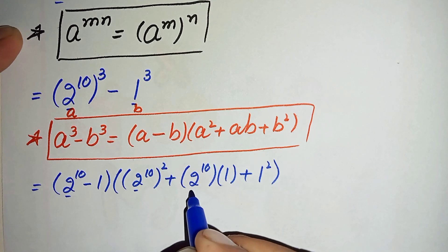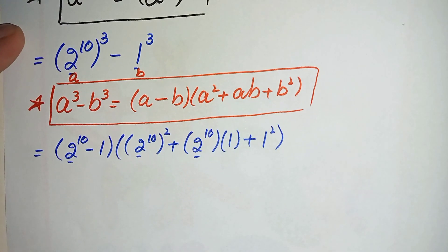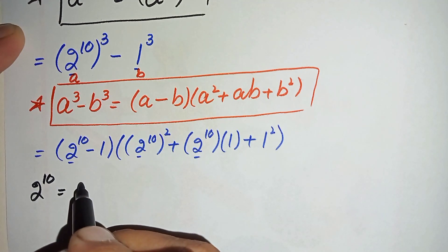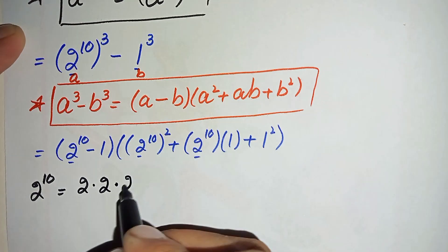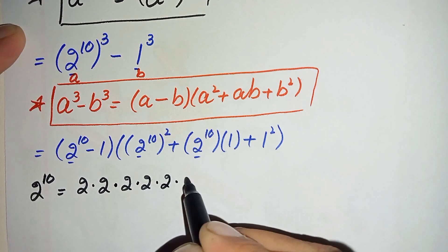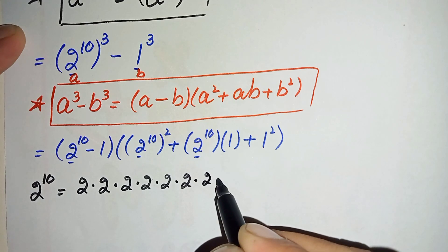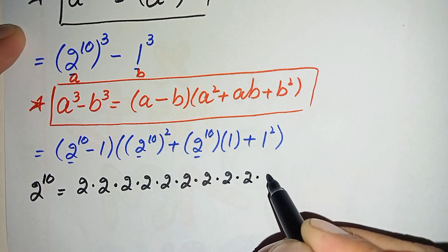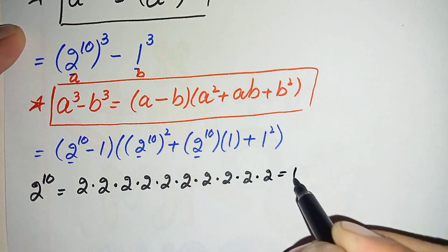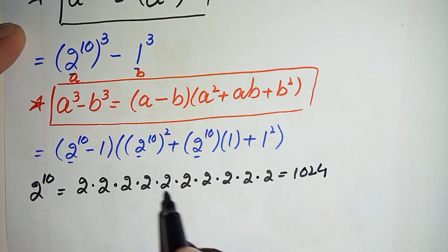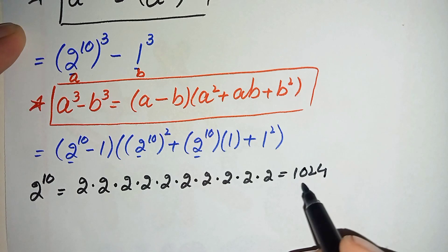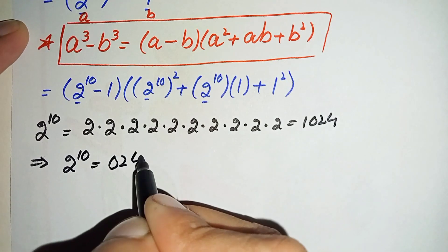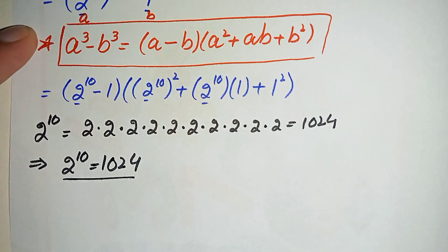In the next step we will find the value of 2 raised to power 10. We need to multiply 2 ten times: 2 times 2 is 4, times 2 is 8, times 2 is 16, times 2 is 32, times 2 is 64, times 2 is 128, times 2 is 256, times 2 is 512, and 512 times 2 is 1024. So 2 raised to power 10 is 1024.